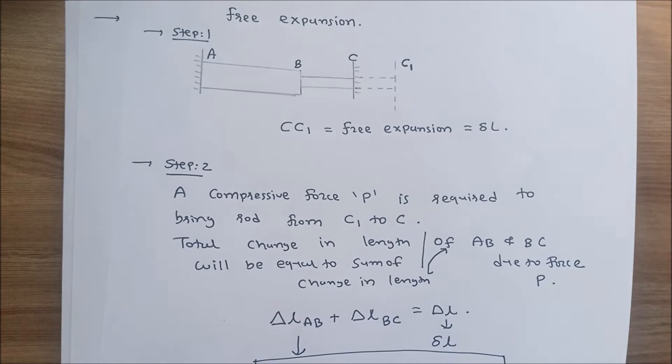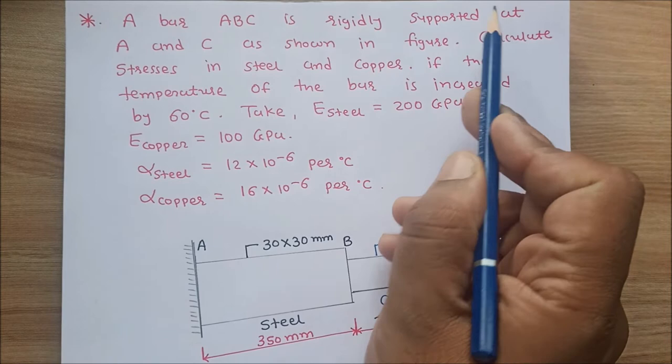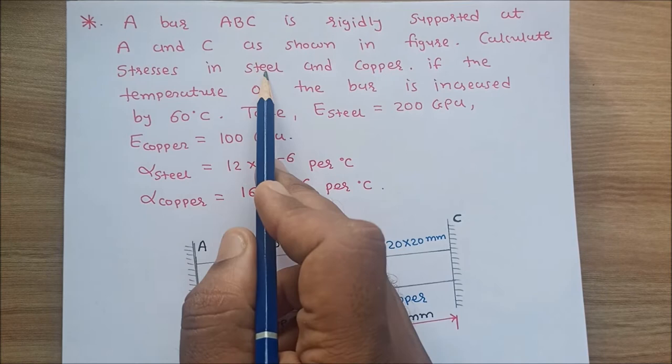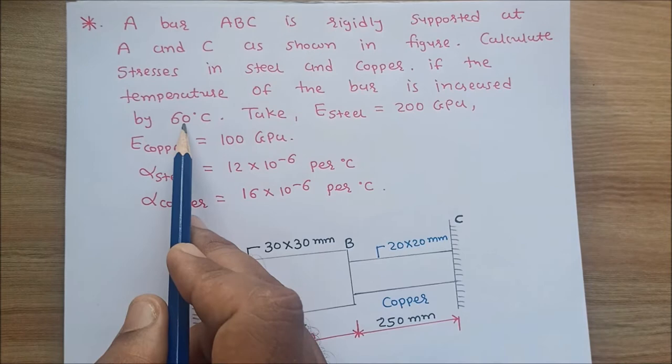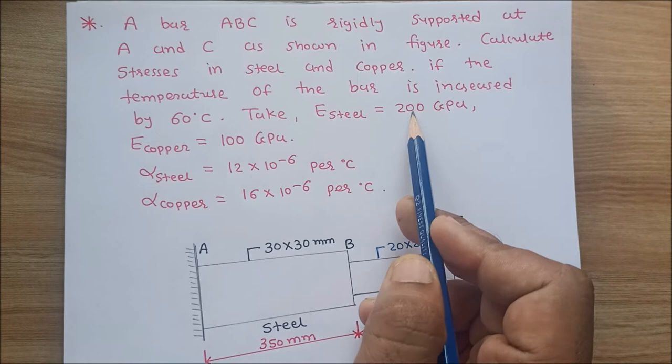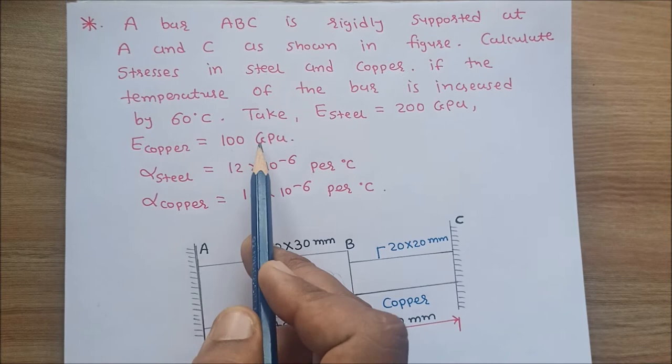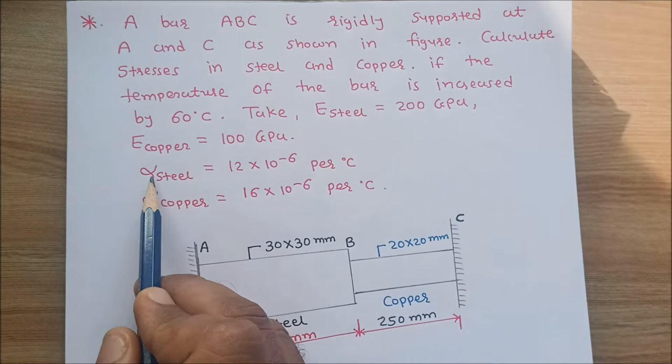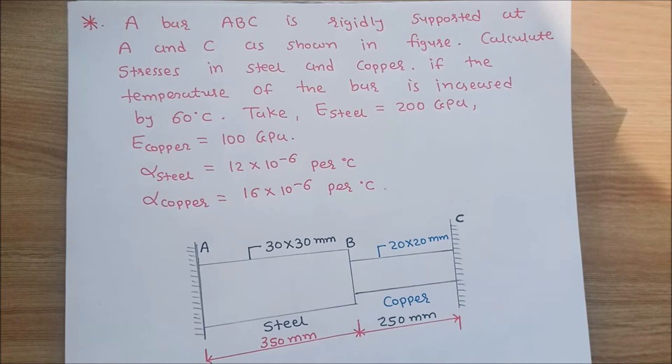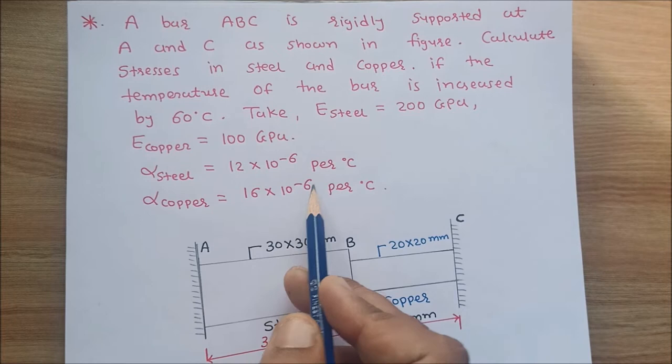In our numerical, data is given: a bar ABC is rigidly supported at A and C as shown in the figure. Calculate stresses in steel and copper if the temperature of the bar is increased by 60 degrees Celsius. Modulus of elasticity for steel is 200 GPa and for copper is 100 GPa. Coefficient of thermal expansion for steel alpha_s is 12×10⁻⁶ per degree Celsius and for copper alpha_c is 16×10⁻⁶ per degree Celsius.